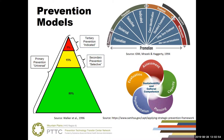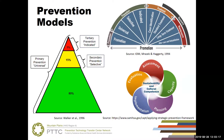Before we dive into IOM's continuum of care model, we want to acknowledge that some of you may be familiar with slightly different prevention models depending on the setting you work in. For those who participated in our last webinar series, we discussed some of the different prevention frameworks and models. For example, many of you are familiar with SAMHSA's strategic prevention framework, which is more of a comprehensive framework or planning process to prevent substance use and misuse. Some of you may also be familiar with the prevention triangle, which is often used in schools and other educational settings. We want to point out that all of these models are complementary rather than exclusive.